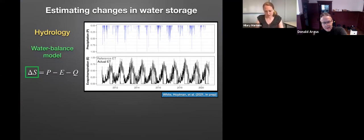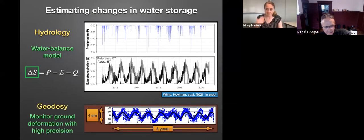Traditionally, estimates of water storage have been difficult to make, particularly for subsurface reservoirs. In hydrology, water storage changes can be estimated using a water balance model where water lost through evapotranspiration and discharge is subtracted from water gained through precipitation. However, the parameters can be difficult to observe and quantify accurately, particularly evapotranspiration, so uncertainties can be large.